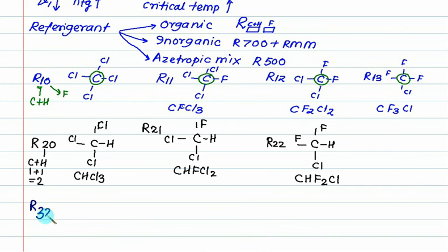For R32, we have C, 1 hydrogen - we have 2 hydrogen. C is 1, 2 hydrogen is number 3, and we want 2 fluorine, so CH2F2.